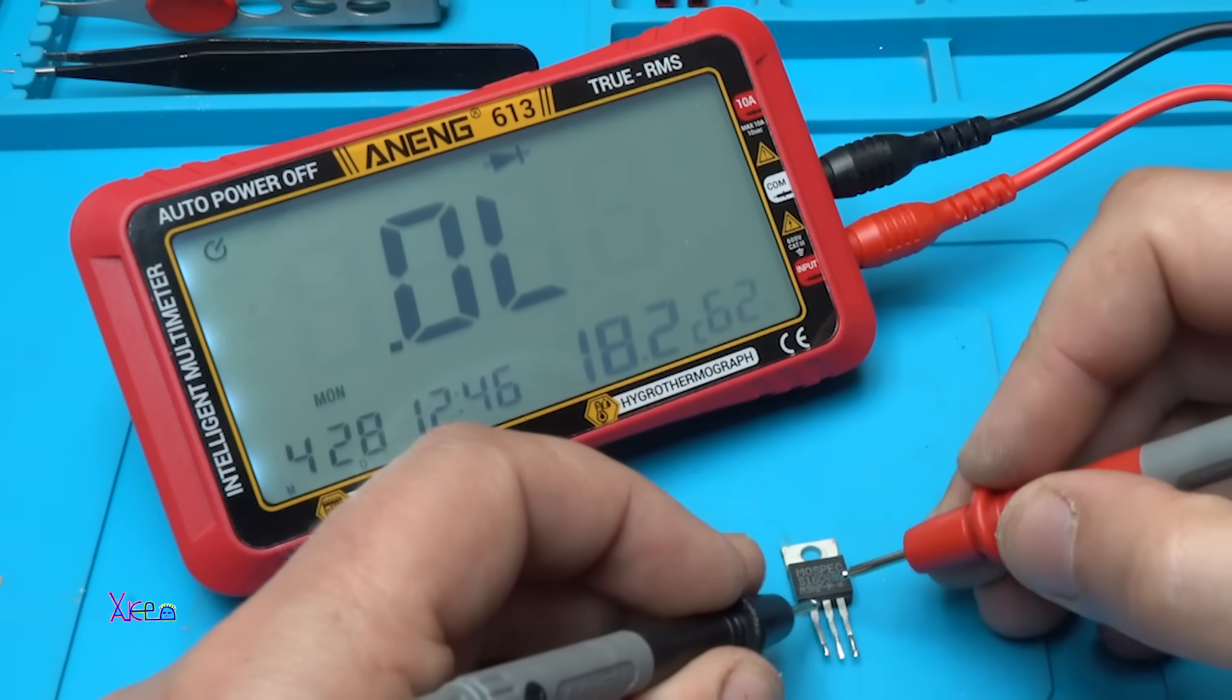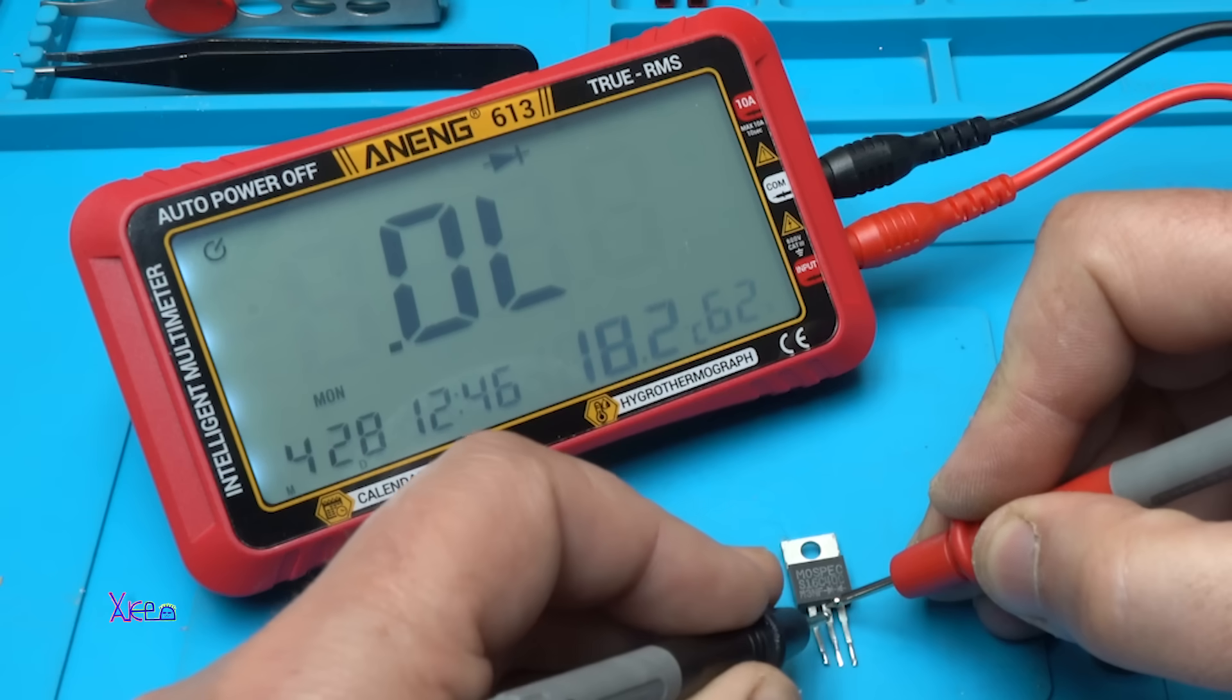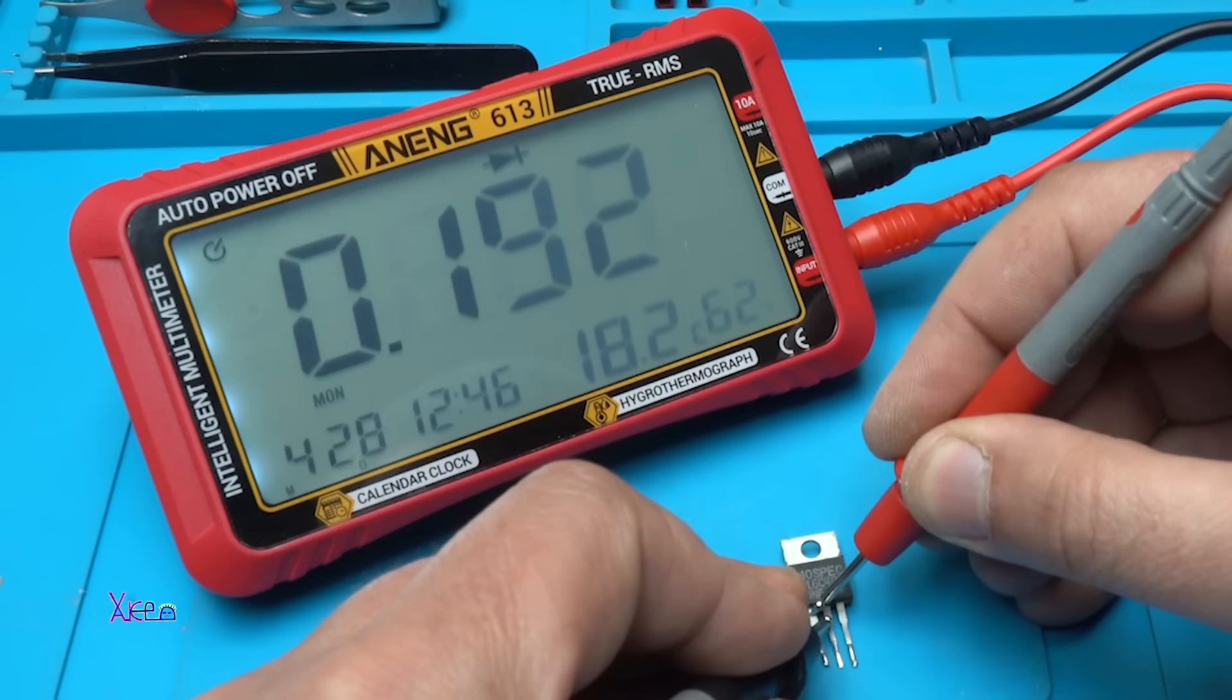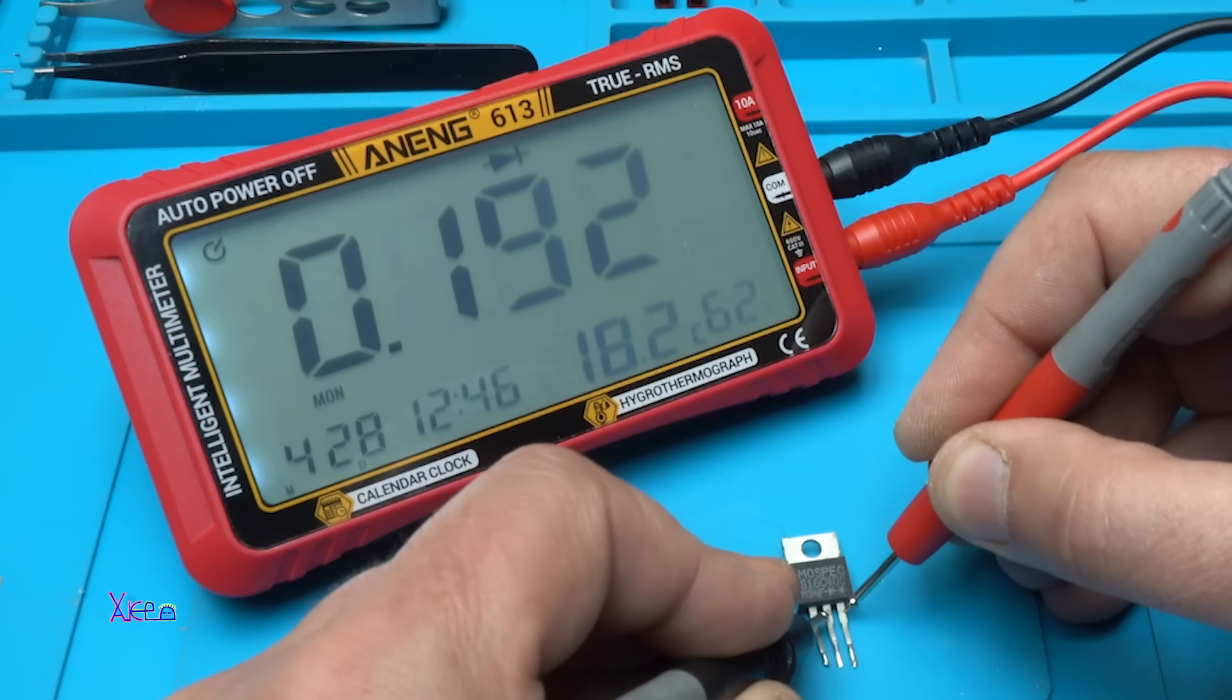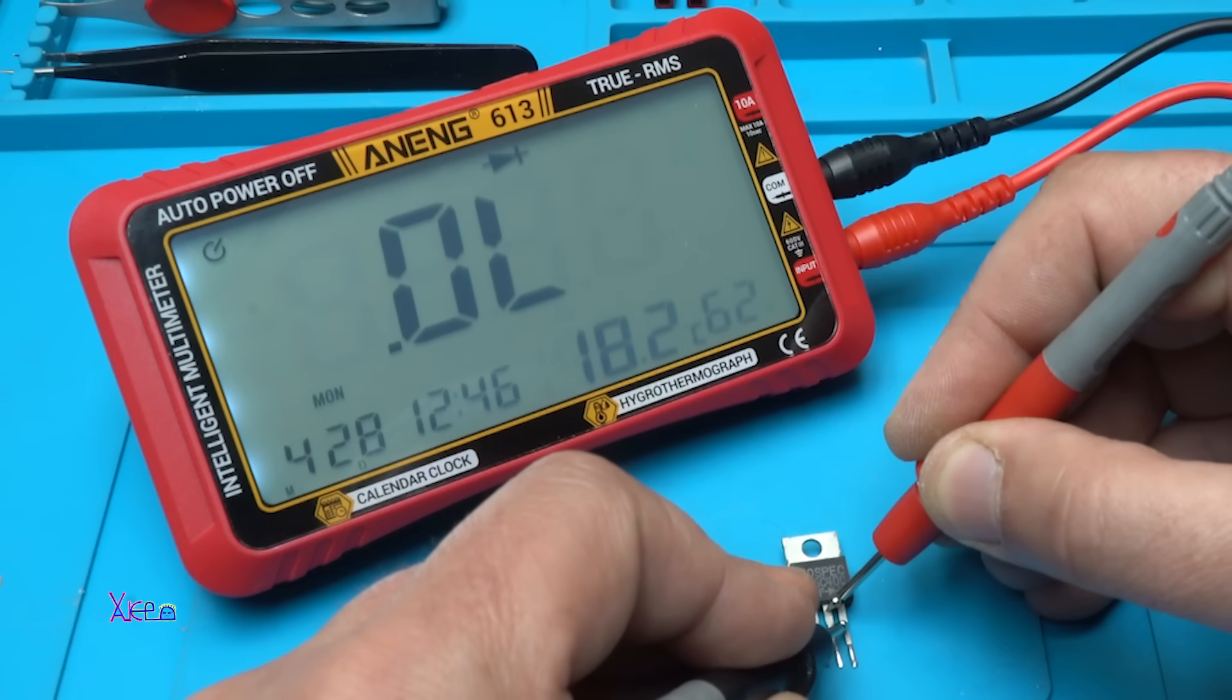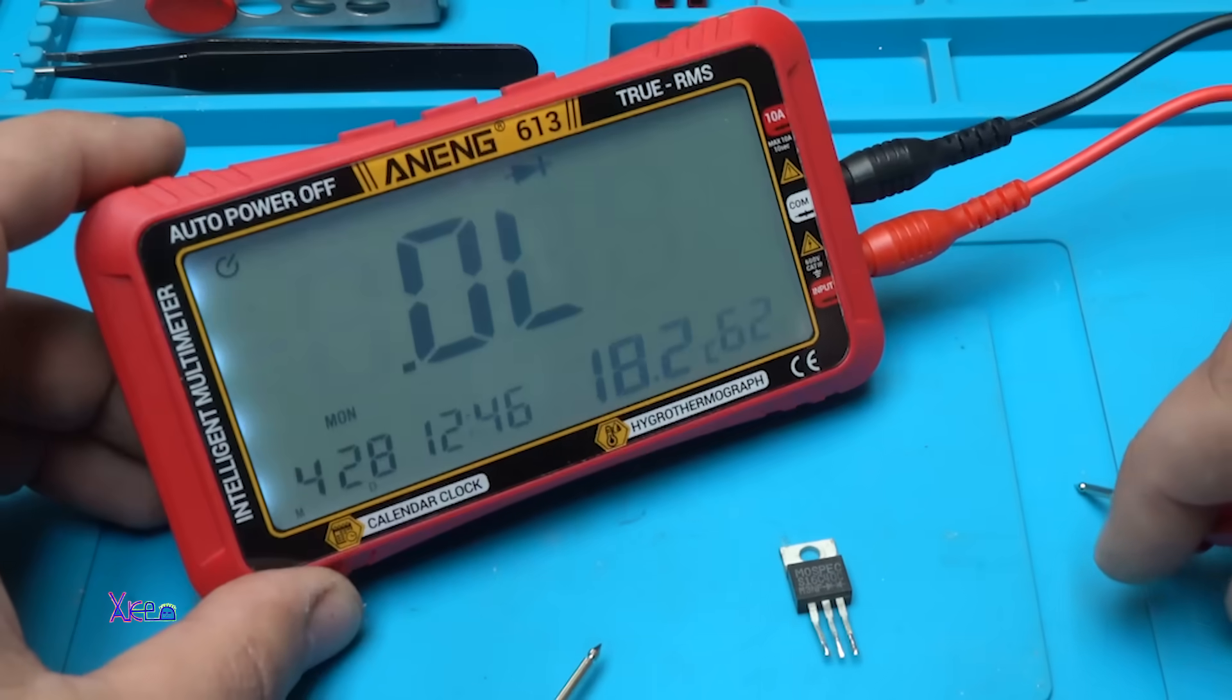Let's measure the diode. Is it okay? This is the Schottky. This is not showing right now. And this way, yes, 0.192. This way, is it the same? Okay. Working fine, the diode tester.